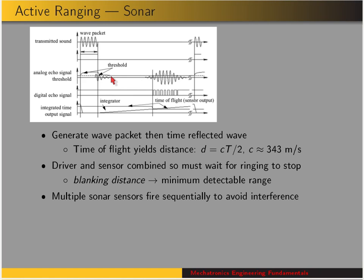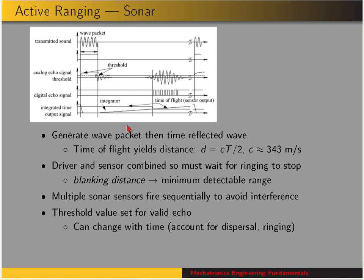If we have multiple sonar sensors on our robot, then they fire sequentially, so that one sensor's emitted packet doesn't interfere with the sensing from another sonar sensor. In order to determine if a signal received by the sensor is a valid echo — meaning that an object was detected — we have some threshold amplitude, so that other sounds coming into the sensor aren't interpreted as objects.